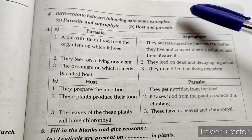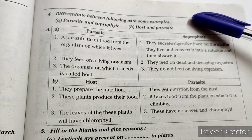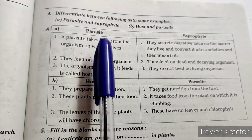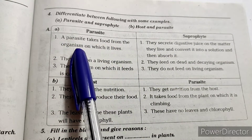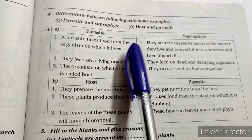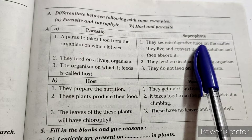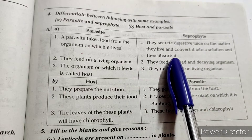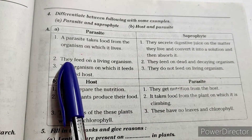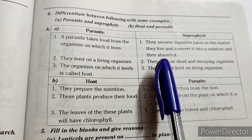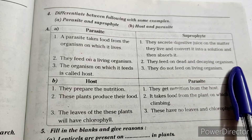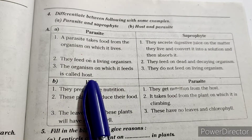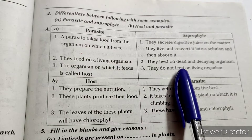Fourth question: Differentiate between the following — parasite and saprophytes; host and parasite. A parasite takes food from the organism on which it lives. Saprophytes secrete digestive juices on the matter they live on, convert it into a solution, and then absorb it. Parasites feed on living organisms; saprophytes feed on dead and decaying organisms. For a parasite, the organism on which it feeds is called the host. Saprophytes do not feed on living organisms.